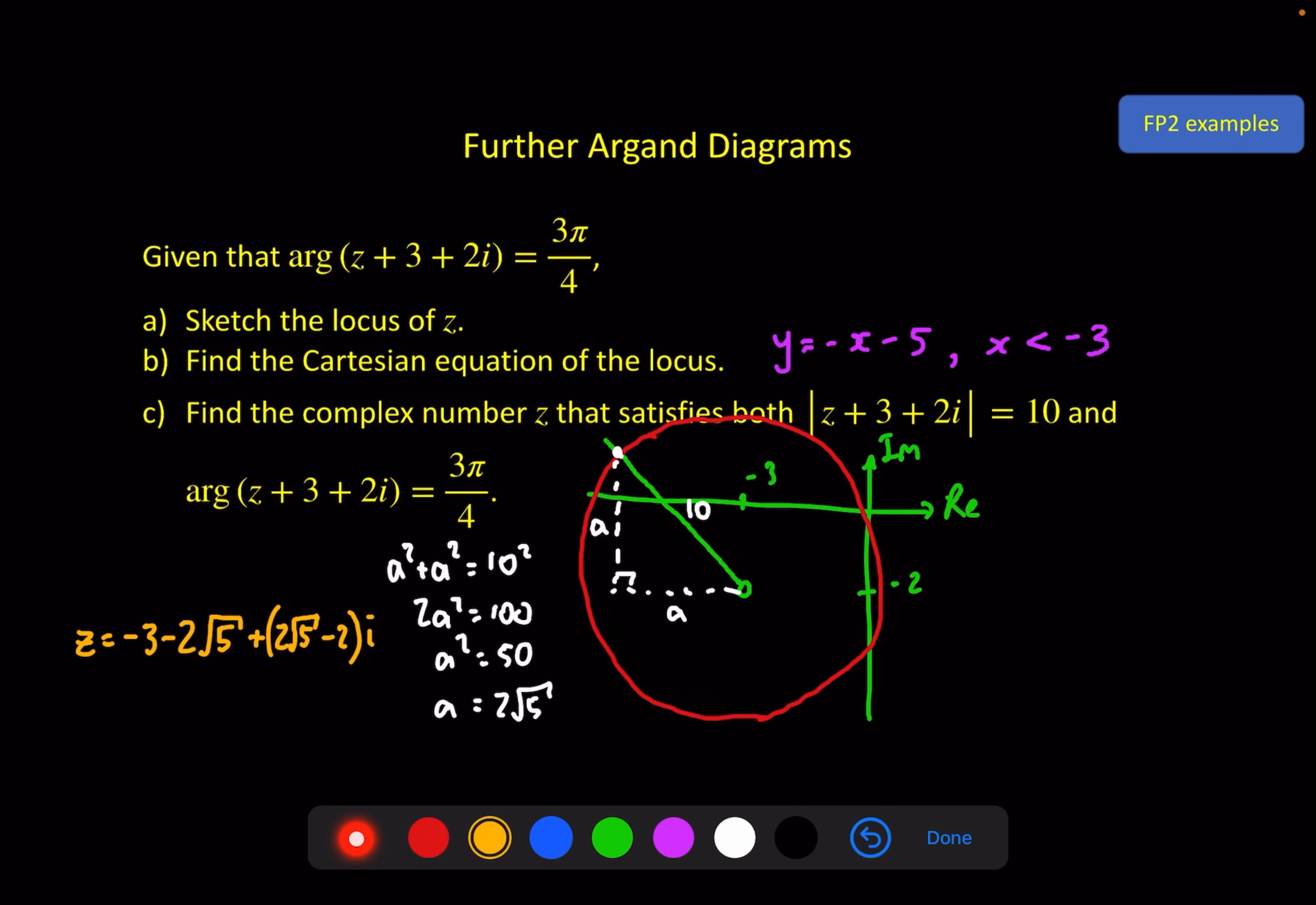So to get this point here from 0, -3 minus another 2√5 gives me -3 - 2√5 for the real part. And then the imaginary part is -2 + 2√5, which I will write as (2√5 - 2)i. This then is the solution to part c. So you could do this whole question with a lot of algebra, and it would be fine. You would get the right answer, so long as you were careful with your algebra. But often with questions like this, there are little problem solving ways to get around a lot of the algebra.